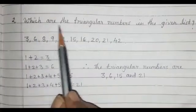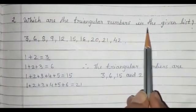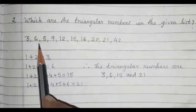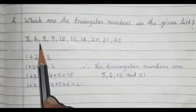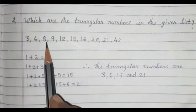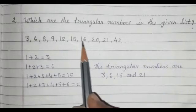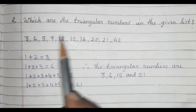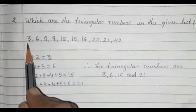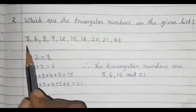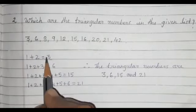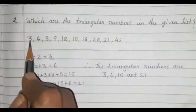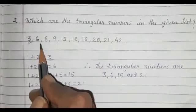Question number 2: Which are the triangular numbers in the given list? The numbers are 3, 6, 8, 9, 12, 15, 16, 20, 21, and 42. We will find out which numbers are triangular numbers. 1+2=3, so 3 is a triangular number. In this list, 3 is a triangular number.